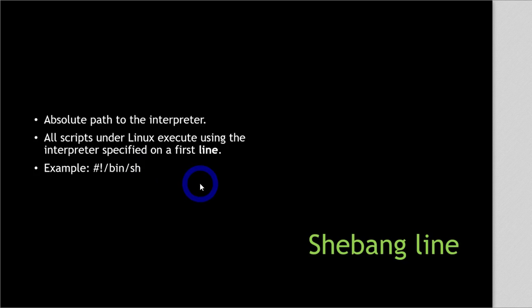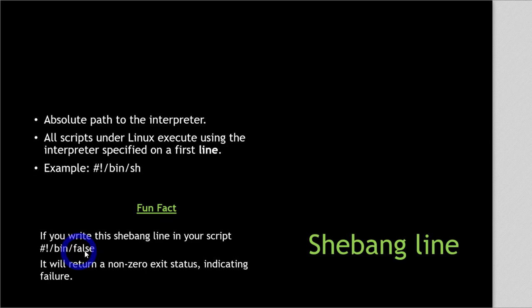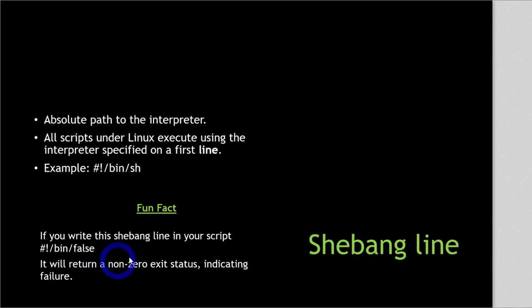There is an interesting shebang line: if you write 'false' in the shebang line instead of sh, your script will not run. It will exit with a non-zero status, indicating failure. So if you have a script that you don't want anyone to run, you can write that there.